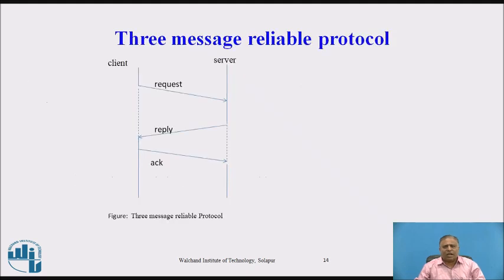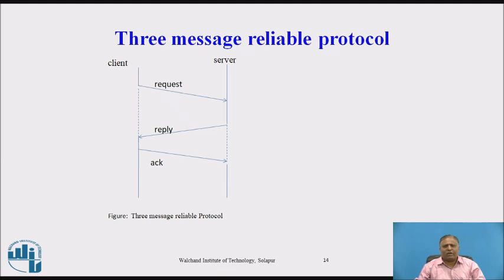Three-message reliable protocol. The client sends a request to the server. The server executes the function or method with the given parameters and returns the result to the client. The client receives the result and sends an acknowledgement back to the server. This constitutes the three-message reliable protocol: request message from client to server, reply message from server to client, and acknowledge message from client to server.